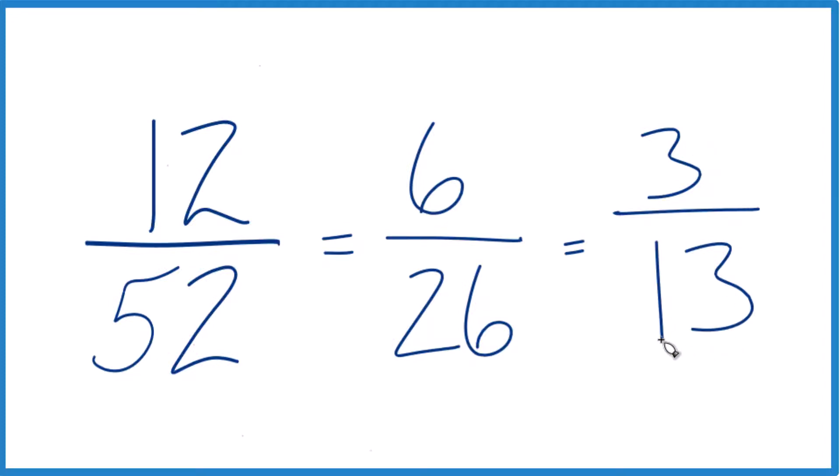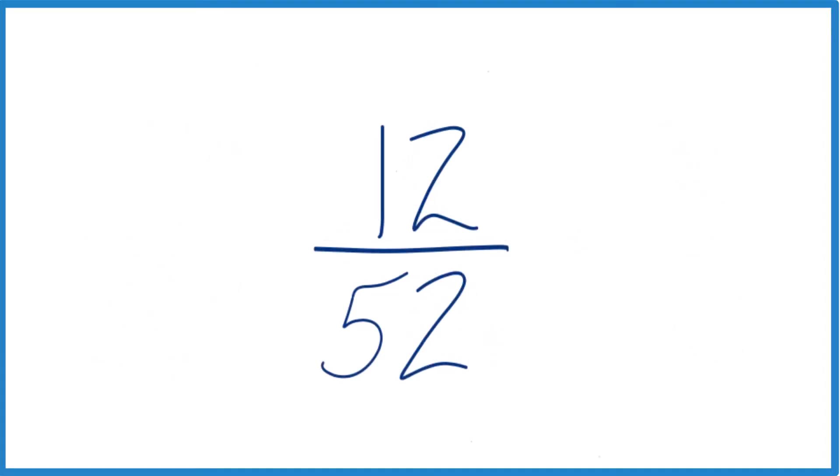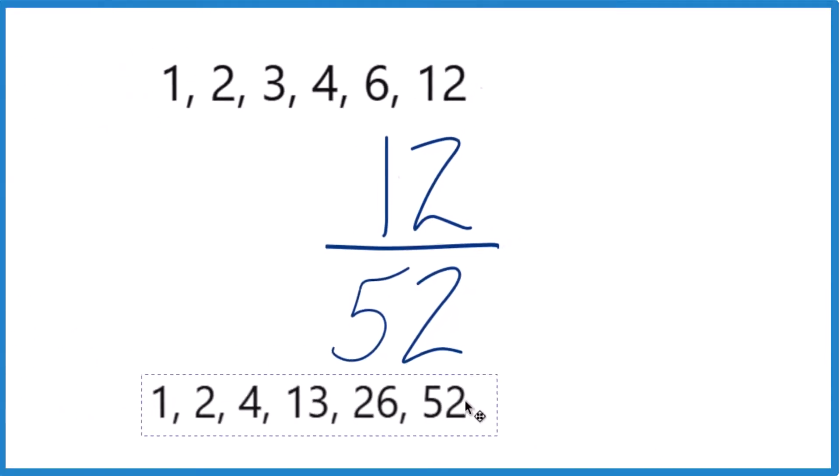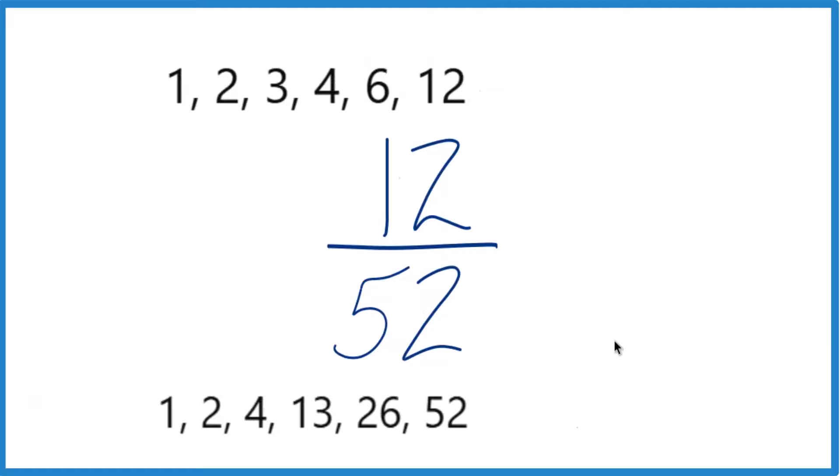Here's the other way you could do it. You could look at the factors for 12, so these are the factors for 12, and the factors for 52, look for the greatest common factor here.